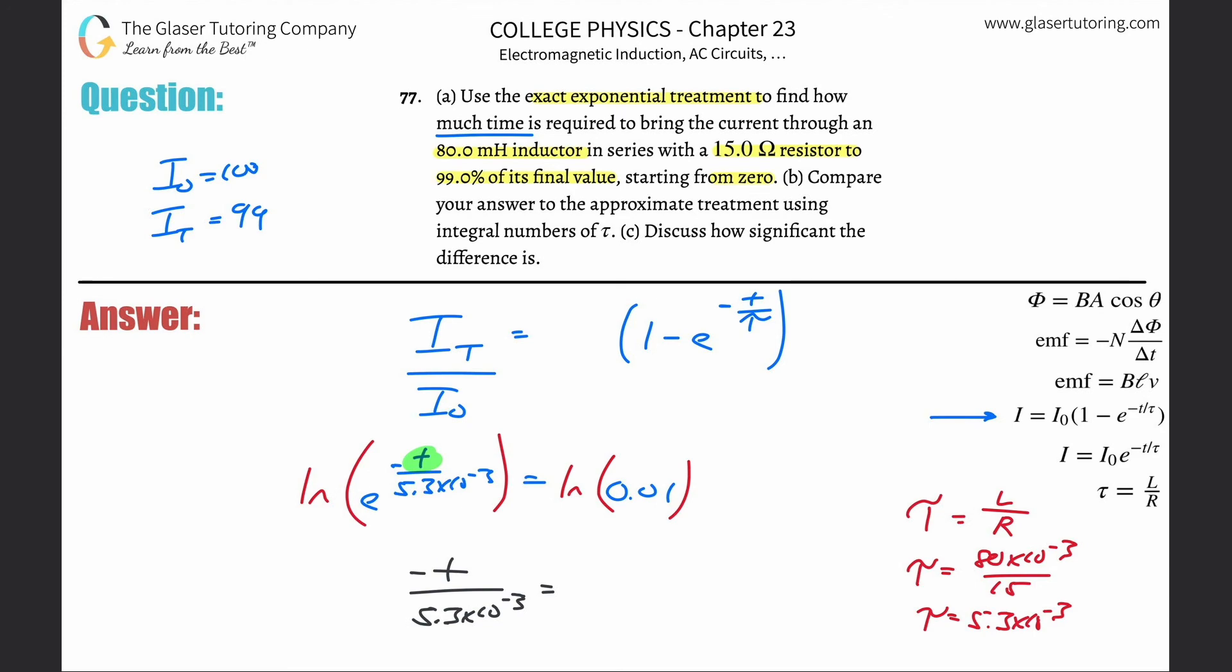ln of 0.01 works out to be negative 4.6. Notice the negatives will cancel, and we're left with this equation now. So how do we solve for time? It's simple—just cross multiply these two.